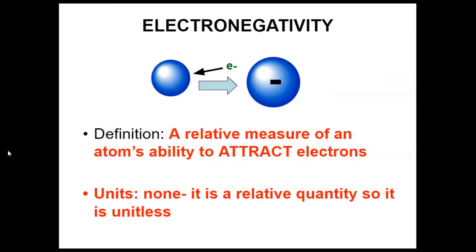Our last major trend is electronegativity — a relative measure of an atom's ability to attract electrons. It's unitless; it's just a relative quantity where values are compared to each other, so we don't have any units for it.